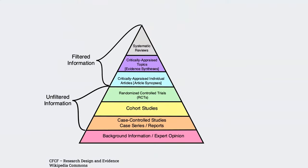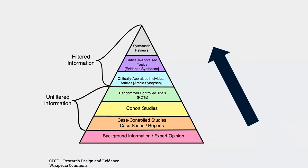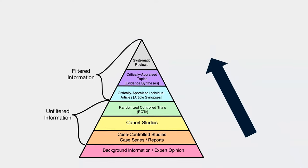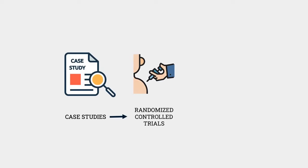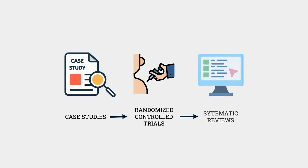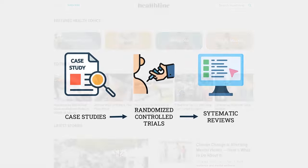There are many levels of evidence and research based on how rigorous a study is. The studies become more rigorous and reliable, or use the highest level of evidence, as you move up the evidence pyramid — from case studies to randomized control trials to systematic reviews.